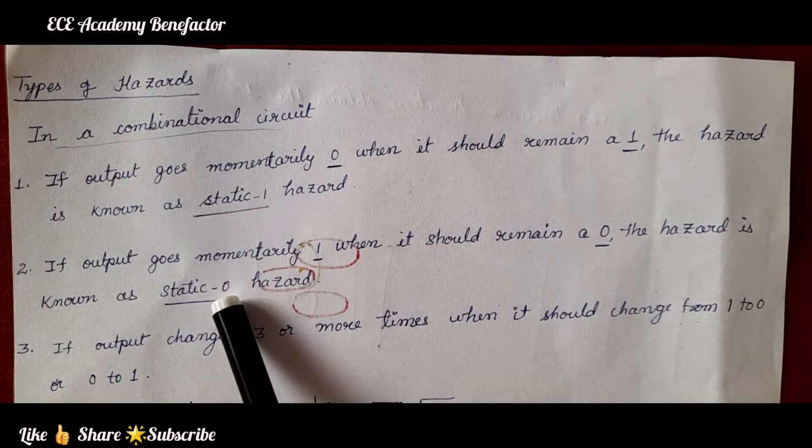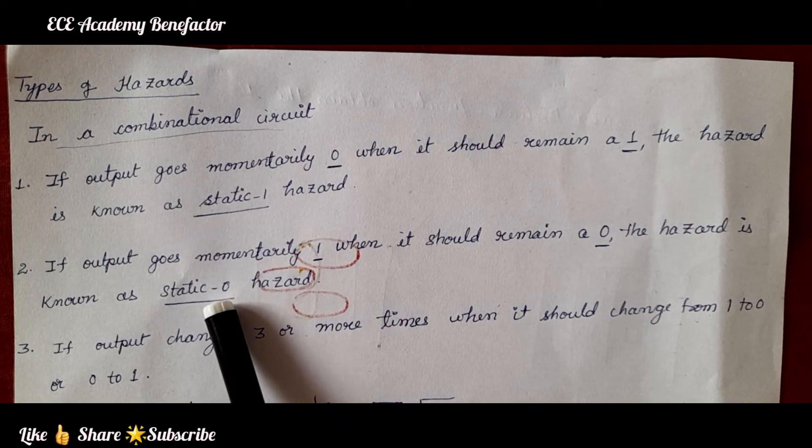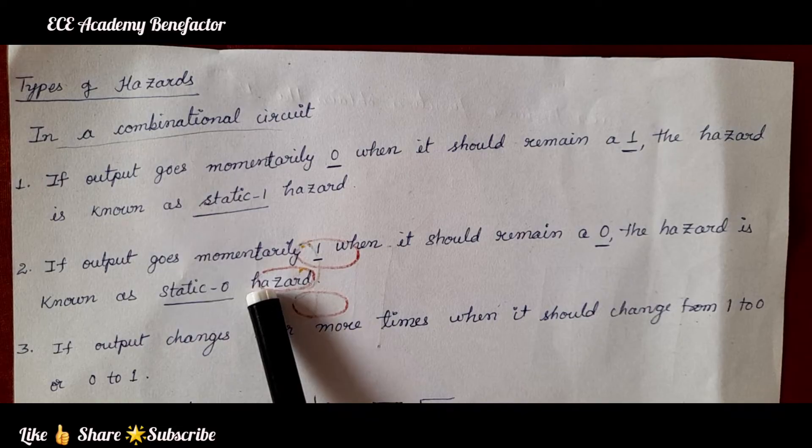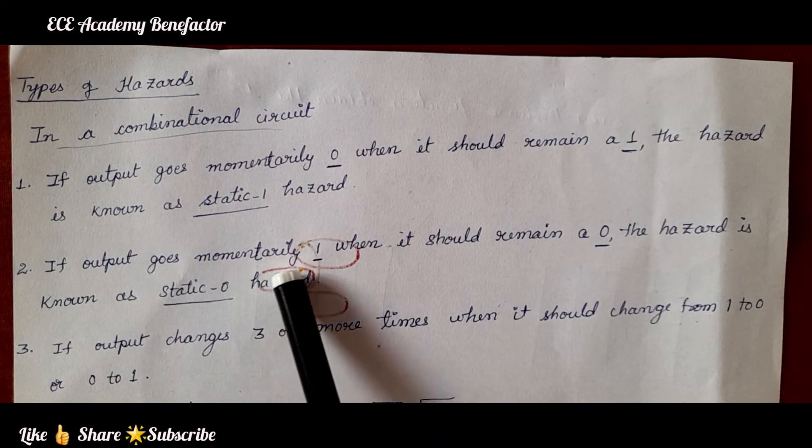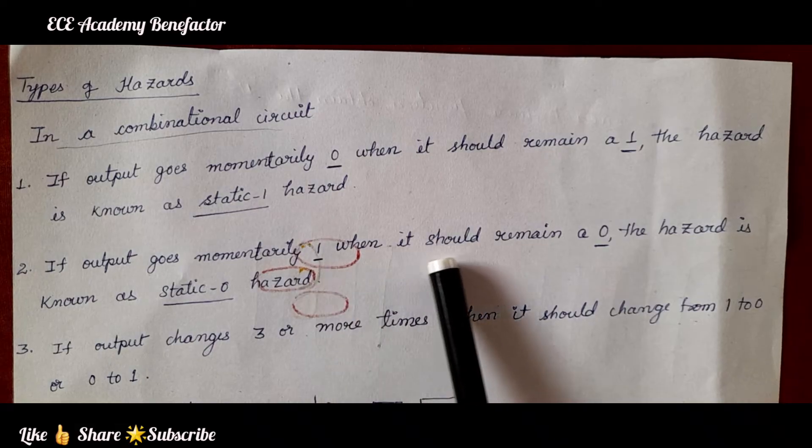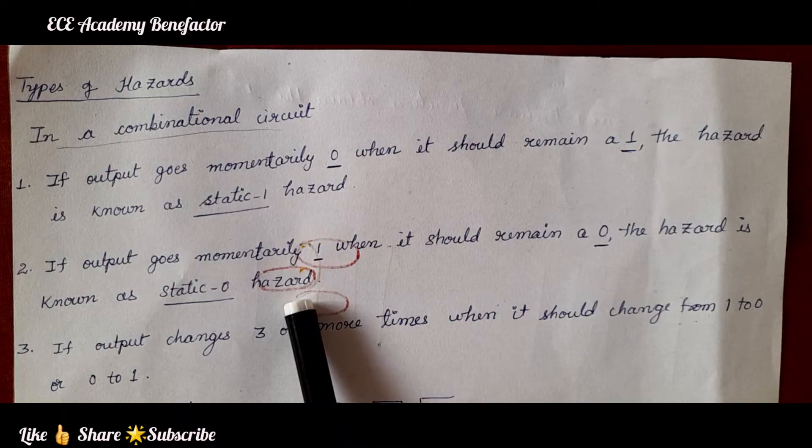Static 0 hazard means the output is supposed to stay at 0, but it is momentarily changing to 1. If the output goes momentarily 1 when it should remain 0, the hazard is known as static 0 hazard.